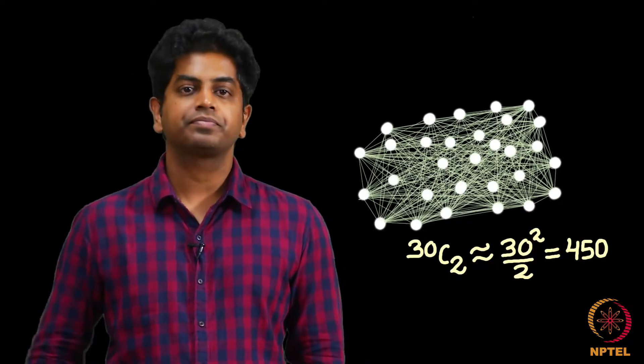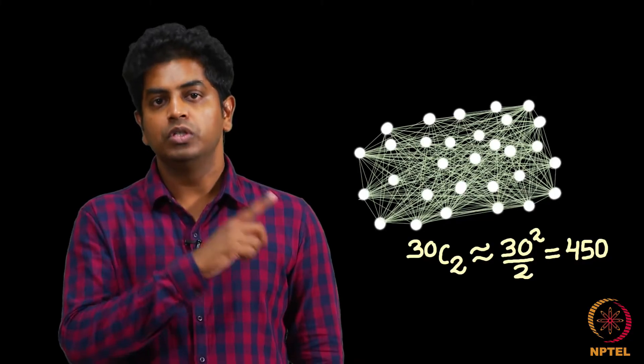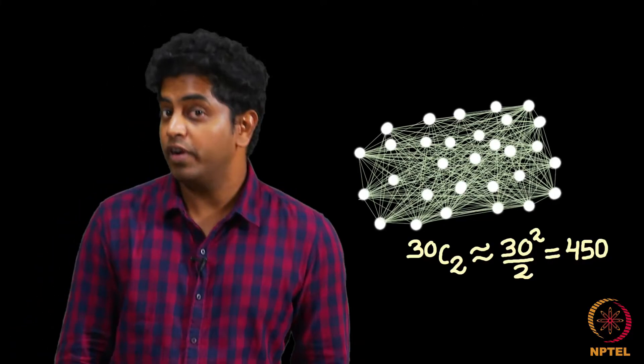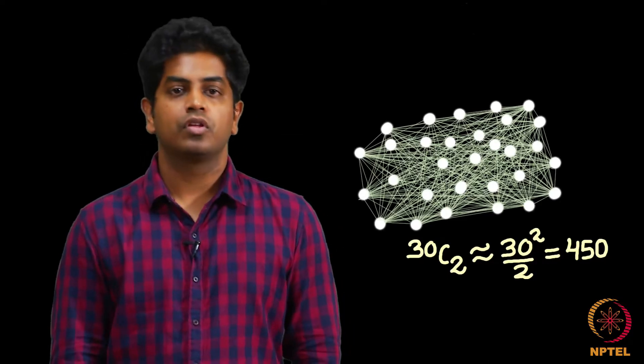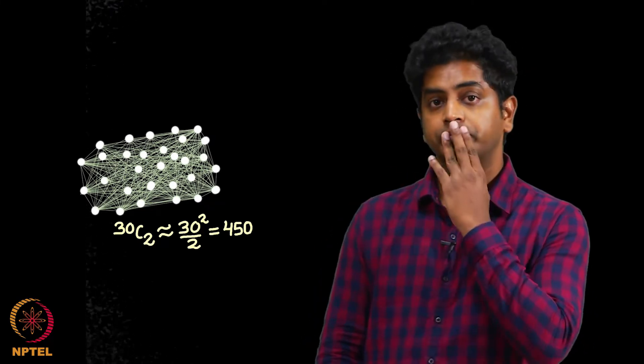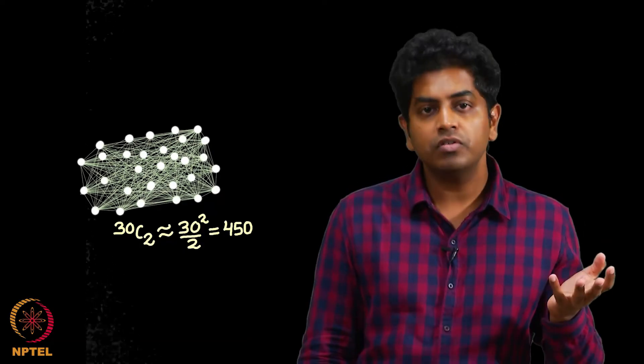With 30 people, you have 30 square by 2 number of friendships which is 450. So far so good. Out of these 450 friendships that you are seeing, some of them can be positive, some of them can be negative.